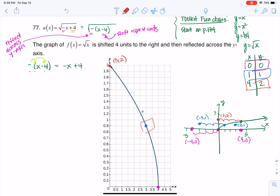So that's how you take a look at number 77. We got reflections. We're shifting right and reflecting across the y-axis. Thanks so much, everyone. Bye.